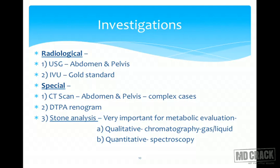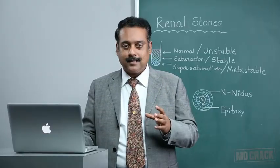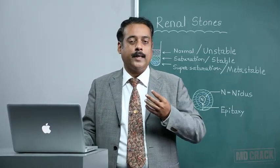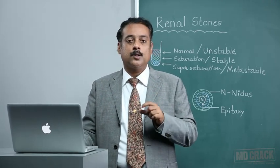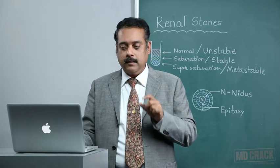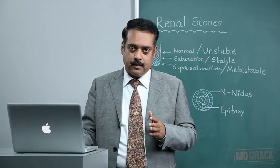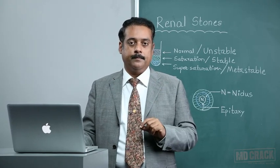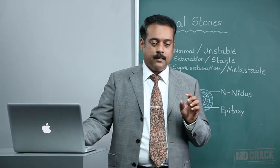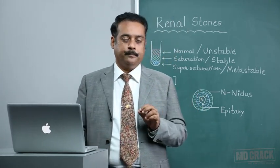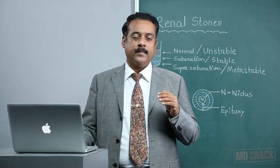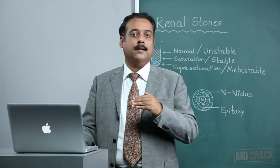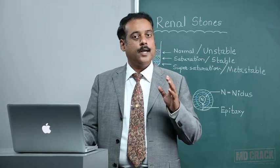The radiological investigations begin with ultrasonography of the abdomen and pelvis, which gives anatomical features such as increased renal size, hydronephrosis, hydroureter, hydropelvis, and the presence of calculus in the kidney. Intravenous urography (IVU) is considered the gold standard, showing a radiopaque shadow on the pilot plate.